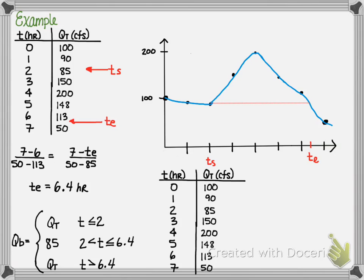So, let's take the hydrograph, the total runoff hydrograph, and let's add to it a column for base flow and direct flow. At time 0, our flow rate is 100, our base flow is 100. Therefore, our direct runoff is 0, 100 minus 100.